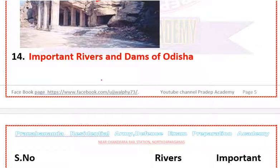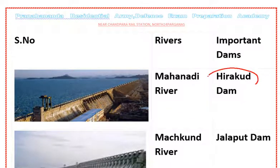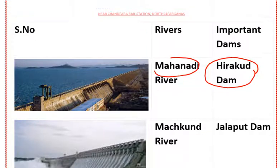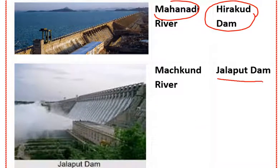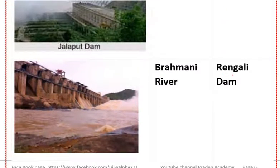Next are the important rivers and dams of Odisha. Hirakud Dam is situated on the Mahanadi river and is the longest dam in India. Jalaput Dam is situated on the Machkund river in Odisha. Rengali Dam is situated on the Brahmani river in Odisha.